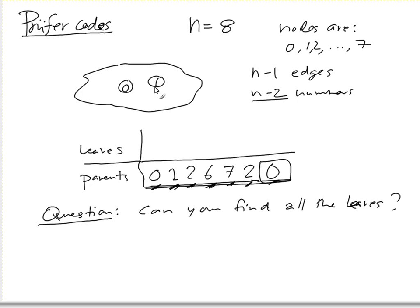What is it? Zero, one, two, six, seven, and two. So that's duplicate, right? So these notes have some child, have some child.